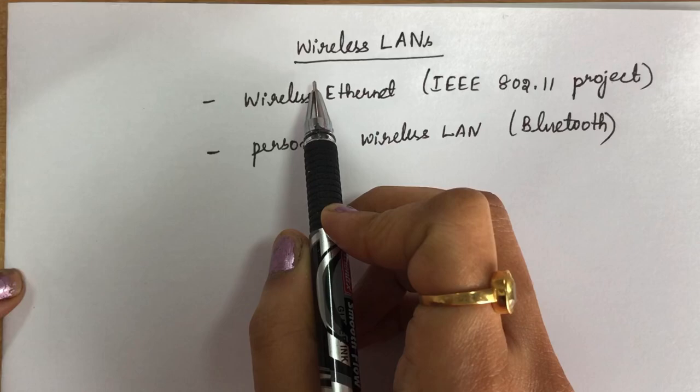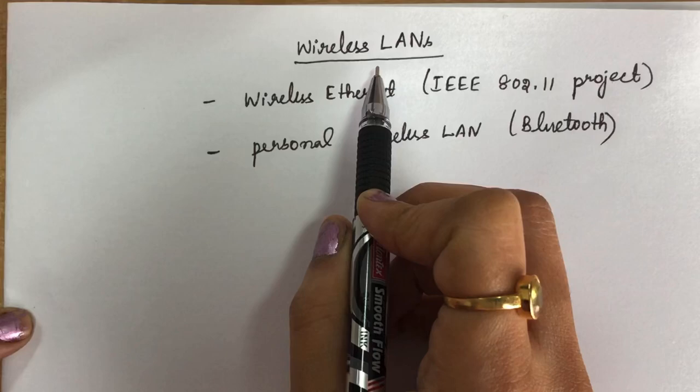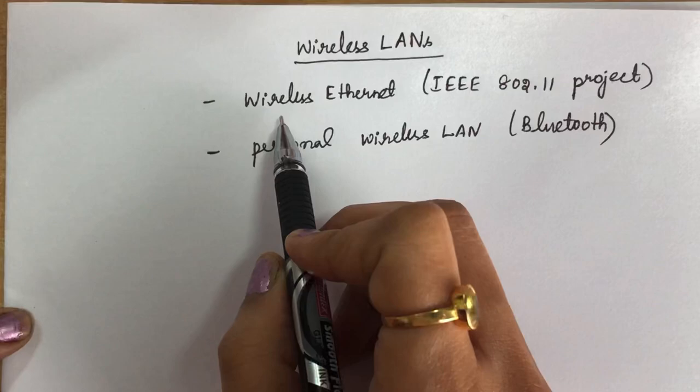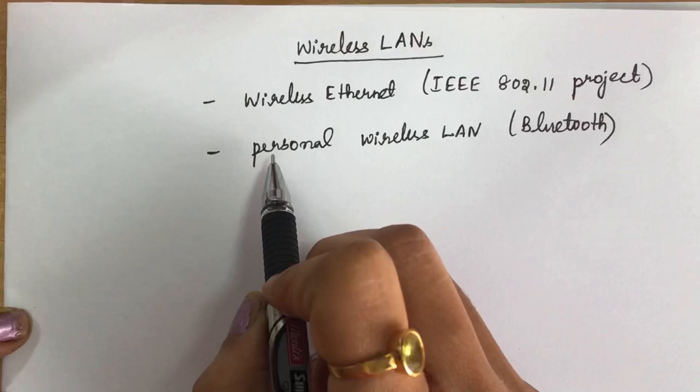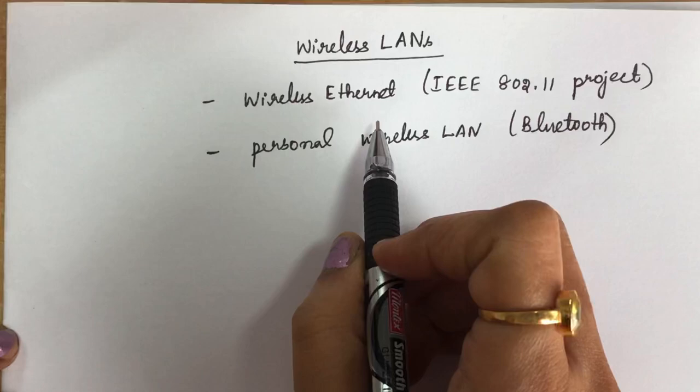Good morning students. Now we are going to see the next topic called wireless LAN. In the previous video we have seen the topics on wired LAN, so now we are going to see wireless LAN. In this video we are going to discuss wireless Ethernet, which is called IEEE 802.11, and we are also going to discuss personal wireless LAN, which is called Bluetooth.